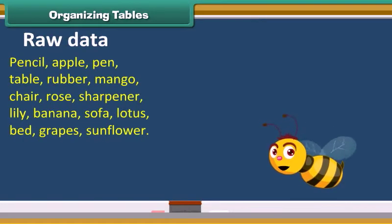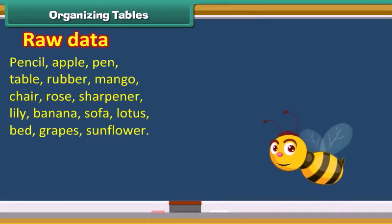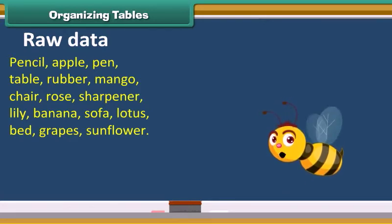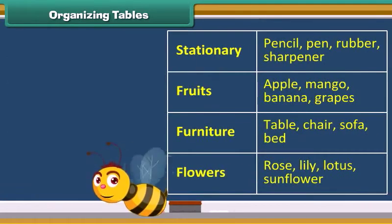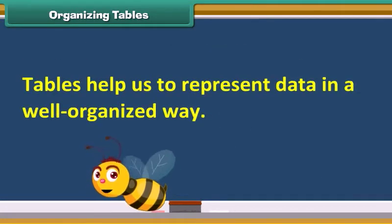Unorganized data is called raw data. The given data represents a raw data. We can arrange this data properly by using a table. Tables help us to represent data in a well organized way.